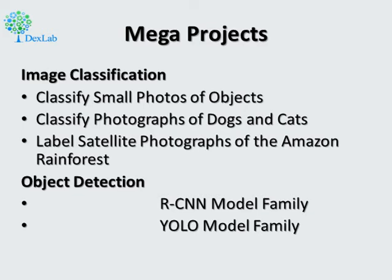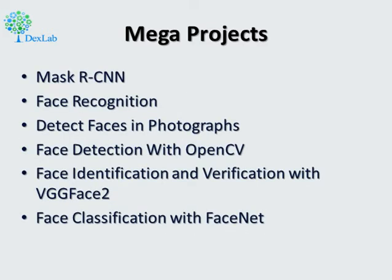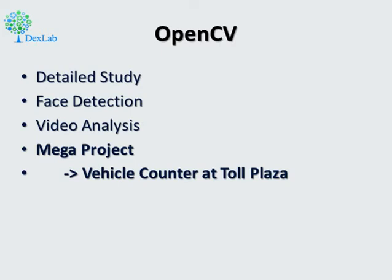Then we go to object detection. There are two major families: R-CNN model family and YOLO model family — we learn both and create mega projects like Mask R-CNN, face recognition, detecting faces in photographs, face detection with OpenCV, face identification and verification with VGGFace2 model, and FaceNet. We learn OpenCV to create state-of-the-art projects like face detection, video analytics, vehicle counter at toll plaza, and student attendance registration by camera — identifying individuals automatically.